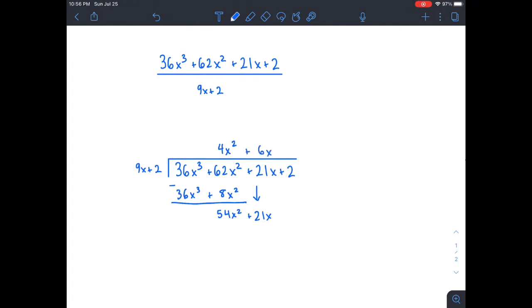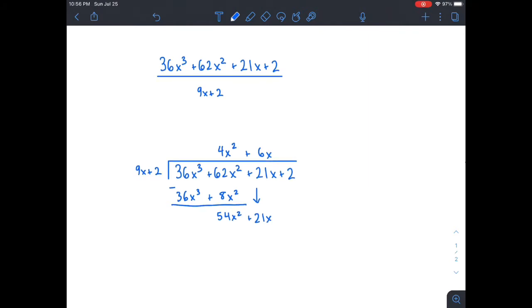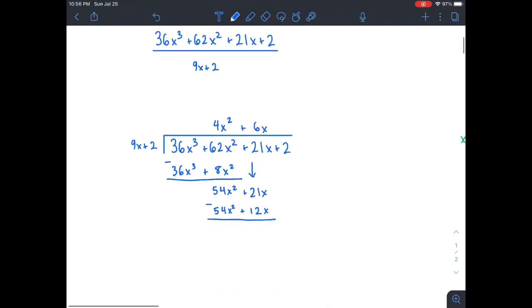So we write that up here, and now we multiply the 6x with each term in the 9x plus 2. And that gives us 54x squared plus 12x. Then we subtract, we get 9x, and then we drop down the 2.